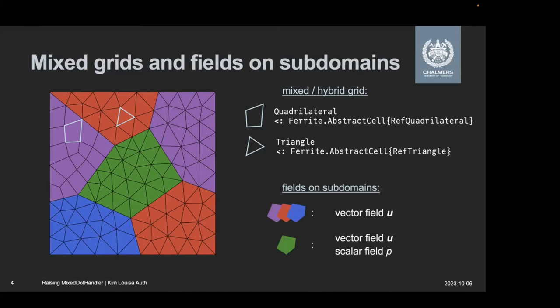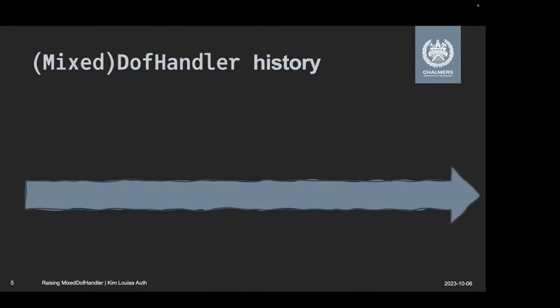And the second part that I want to talk about today is what if I want to introduce a field on just a part of the subdomain of the domain. So let's say I have this as a polycrystal. I want a displacement field everywhere. But let's say this green central grain should be incompressible. And I want to use displacement pressure split to tackle that. That would mean I need a pressure field. But I only really need that on the green grain in the center.